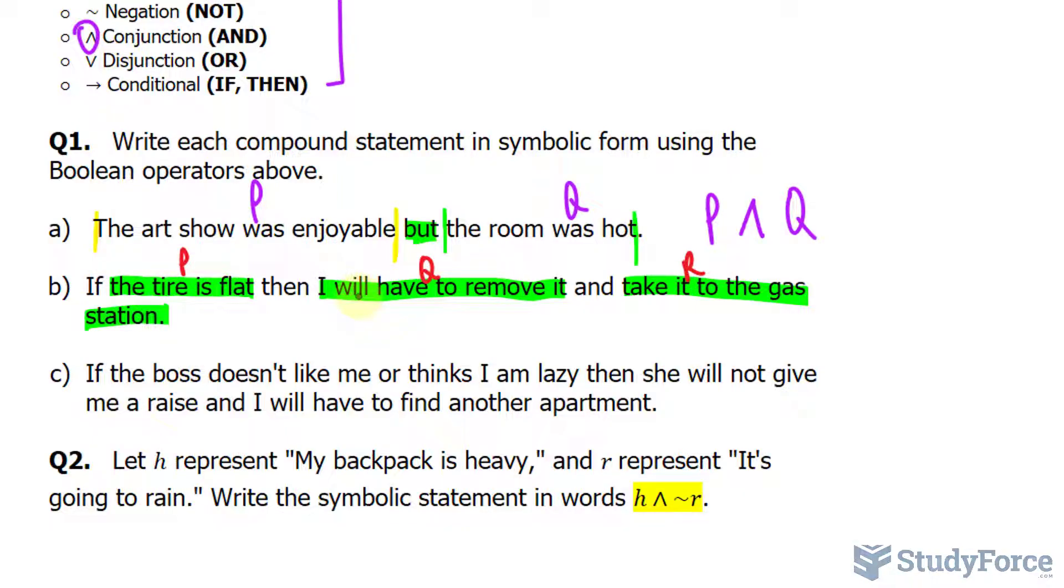If and then statements can be represented using this arrow. So I can write down P arrow Q and this symbol R.